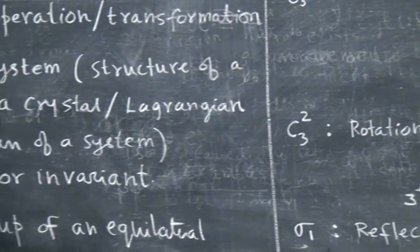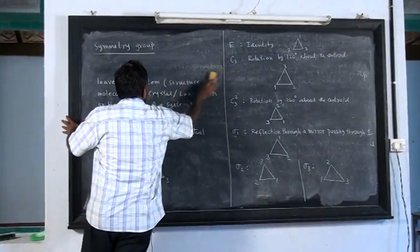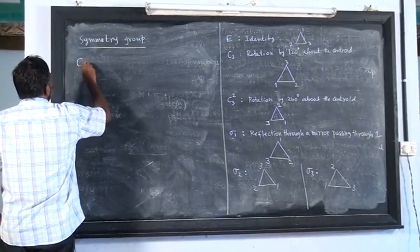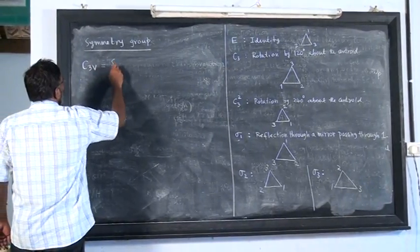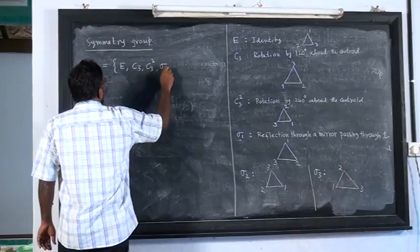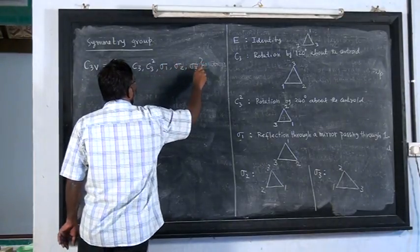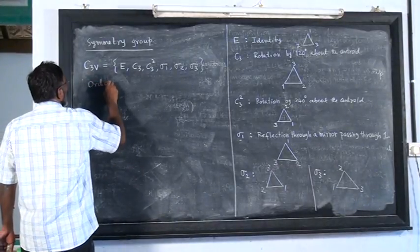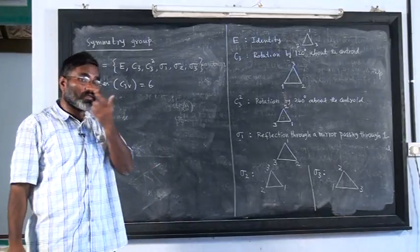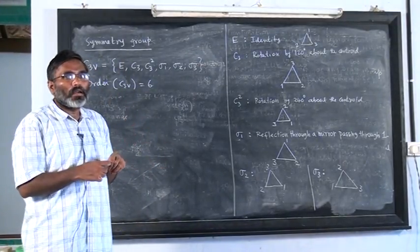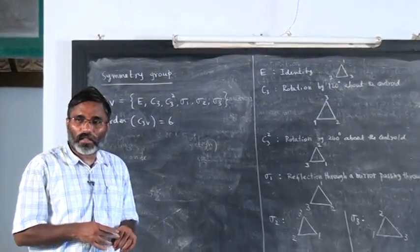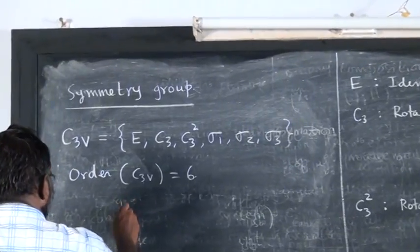Now we want to establish that the set of all operations form a group. In chemistry, there is a symbol called C3V, which is a group formed by these elements: E, C3, C3², σ1, σ2, σ3. What is the order of this group? 6. Now of course I do not know whether this forms a group or not, we have to verify, but I am assuming that it will form a group. How do we know whether this will form a group or not? We have to verify all the rules for each one of the elements. Instead of that, once and for all, we can make a multiplication table.